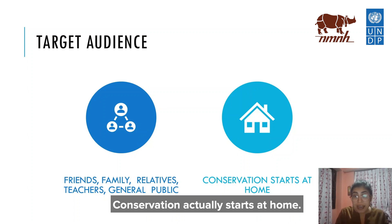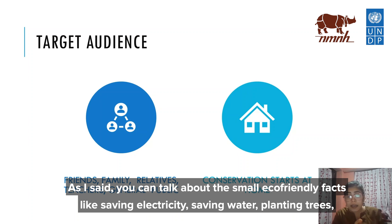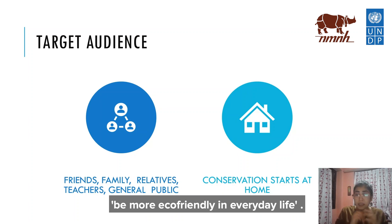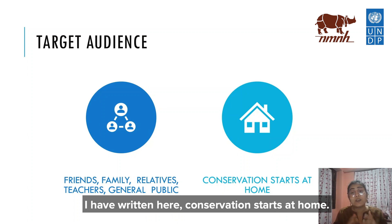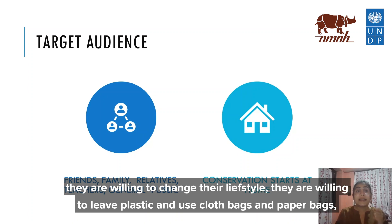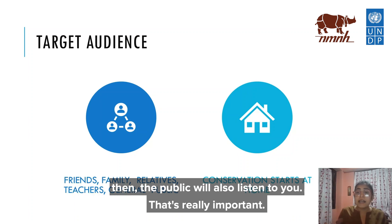Conservation actually starts at home. Small eco-facts like saving electricity, saving water, planting trees, doing carpooling — or any conservation action that can help save the environment. Don't hurt the environment, don't hurt the animals; be more eco-friendly in everyday life. If you are able to communicate well with your family and friends and they are willing to change their lifestyle — leaving plastic and using cloth bags or paper bags — then the public will also listen to you.